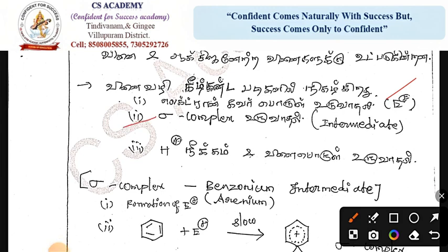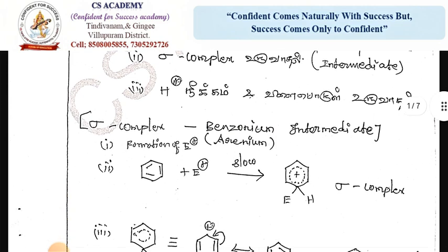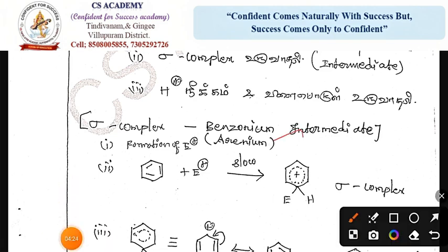We have a sigma complex. The arenium ion is a benzene-based intermediate. Then we have H+ leaving. We have a product. This is a simple or general mechanism. First we need to form the electrophile, then a bond is formed using the power of electrons.